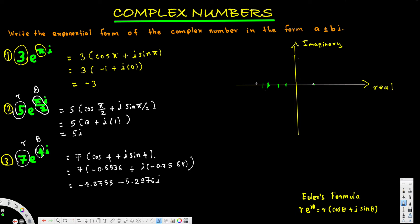The real part is negative 4.5, so we go about 4.5 units to the left on the x-axis. The imaginary part is negative 5.2, so we go about 5.2 units down on the y-axis. The complex number is located in the third quadrant. The distance from the origin is 7, since r equals 7, and the angle from the positive x-axis is 4 radians.